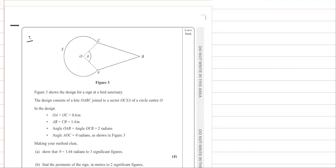Figure 3 shows the design for a sign at a bird sanctuary. The design consists of a kite OABC and a sector OCXA.